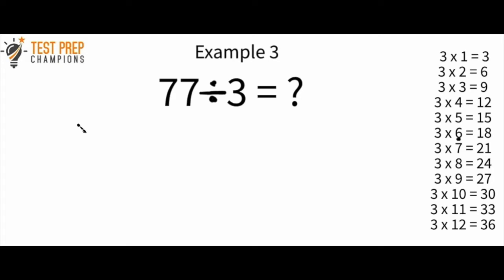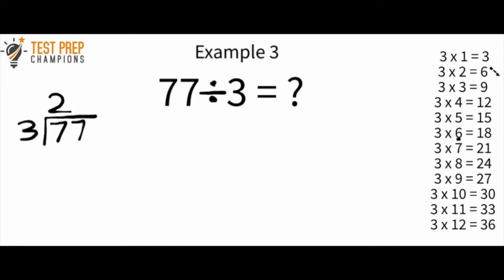The next example is 77 divided by 3. You can pause the video and try to figure this out. Anytime you see something written like this, I would probably just rewrite it right away so that it looks like 77 divided by 3, with 77 underneath the division symbol and 3 outside. As always, we want to think: how many times does 3 go into 7? 3 goes into 7 two times, because 3 times 2 gives me 6, which is close to 7 but less than 7. I have to do 3 times 2, which is 6, and draw that 6 down here directly below the first 7. 7 minus 6 is 1.